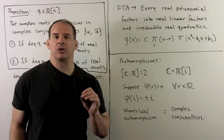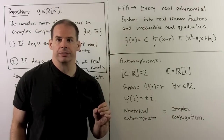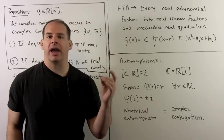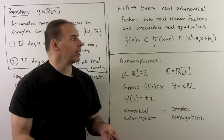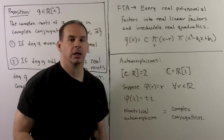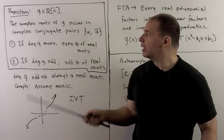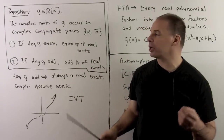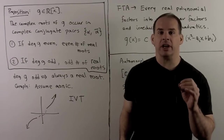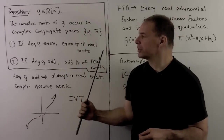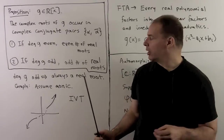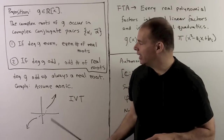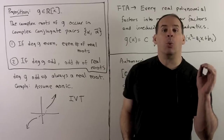Therefore, every real polynomial factors into the product of real linear factors and irreducible quadratics over ℝ, possibly with multiplicities. This gives us the proposition that complex roots of g occur in complex conjugate pairs. If the degree of g is even, there are an even number of real roots; if the degree of g is odd, there is an odd number of real roots. In particular, if the degree is odd, there exists at least one real root.